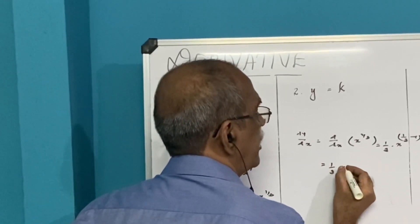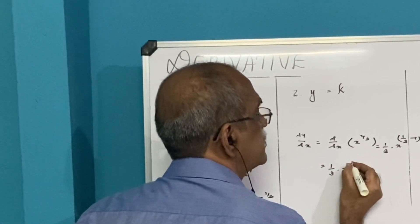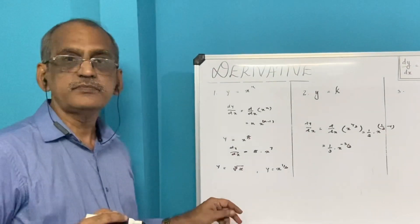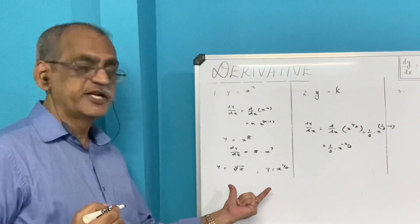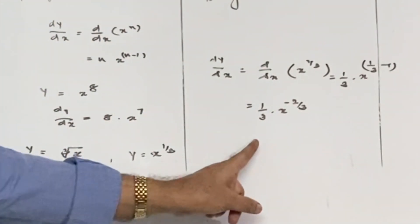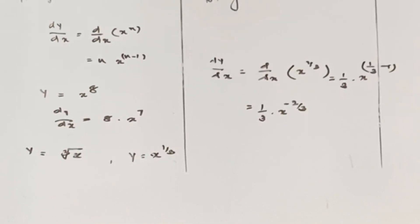So here you have differentiated the cube root of x. The dy/dx of cube root of x is 1/3 times x raised to minus 2/3.